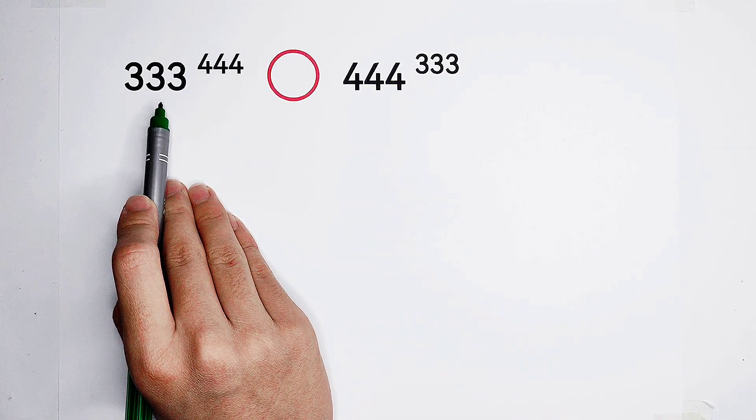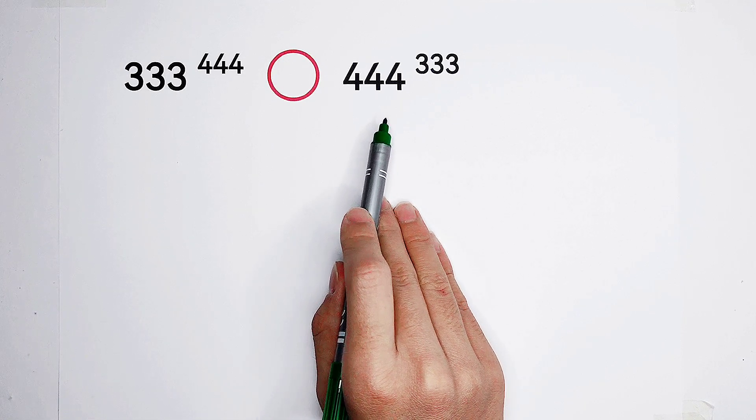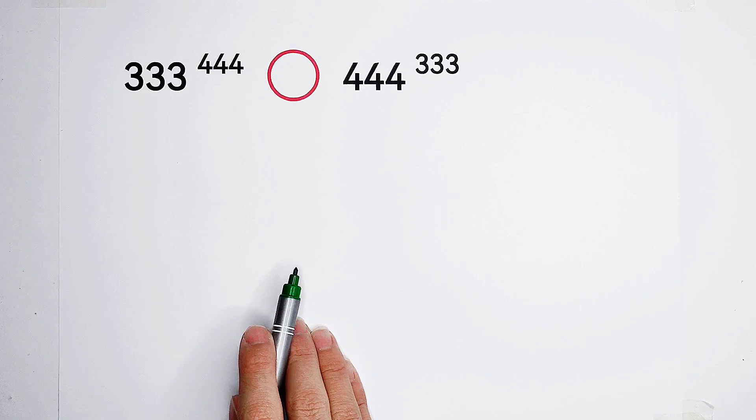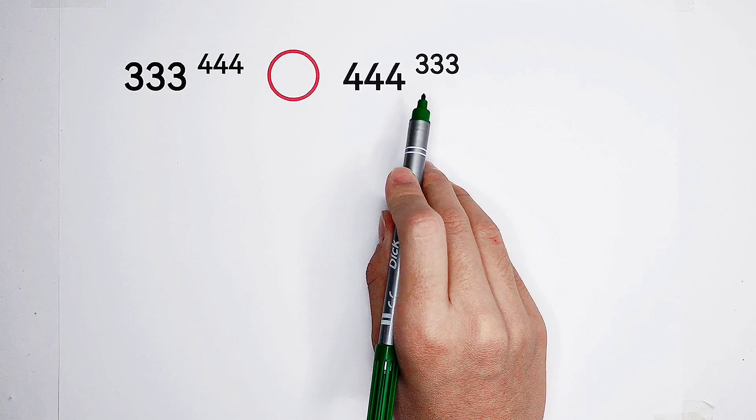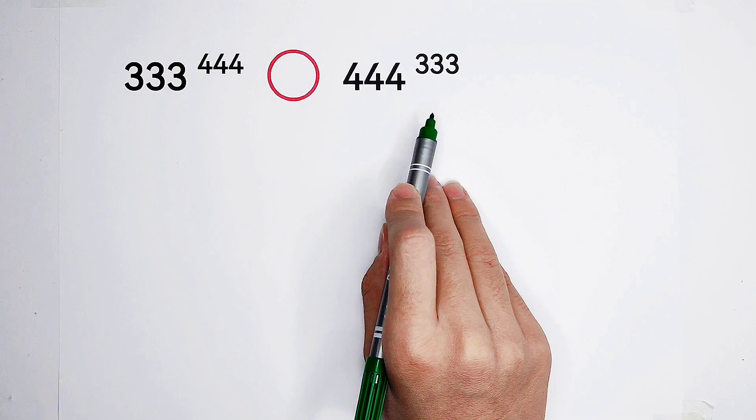This is 3 times 111, and this is 4 times 111. Very good, then what shall we do? So, of course, replace 444, 333, which are the exponents, with 4 times 111 and 3 times 111.